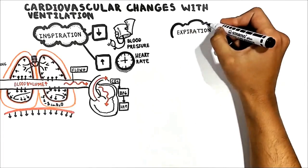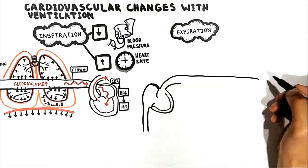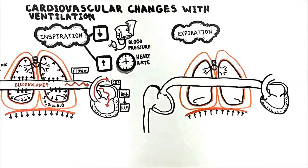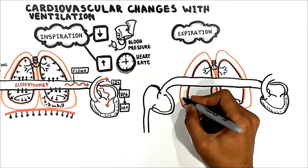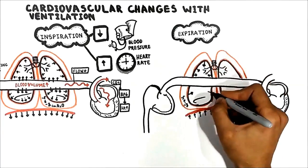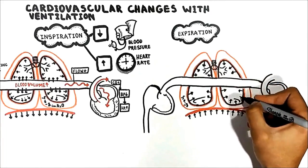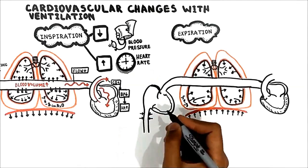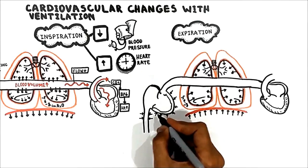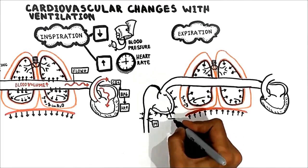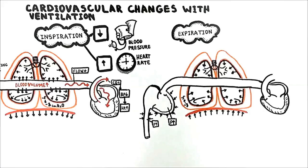Next, let's see how expiration changes the blood pressure and heart rate. During expiration, first the diaphragm relaxes. This increases intrapleural pressure, returning it to the original negative value — from negative 8 to negative 5 cm water. The lung deflates and returns to its original size. In addition to the lungs, the size of the great veins and right atrium also decrease to their original size.